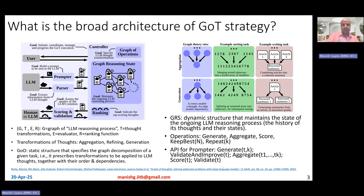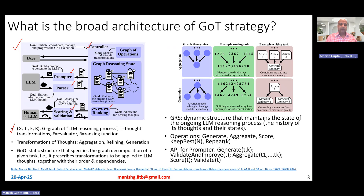How do you operationalize the graph of thoughts strategy? The broad architecture can be represented as a four-tuple (G, T, E, R): G is the graph of LLM reasoning process, T is the thought transformations, E is the evaluator, and R is the ranking function. The architecture comprises four or five main modules: a controller, a prompter, a parser, a scoring and validator, and a ranker. When a user has a query — like a sorting task — they bring it to the controller.